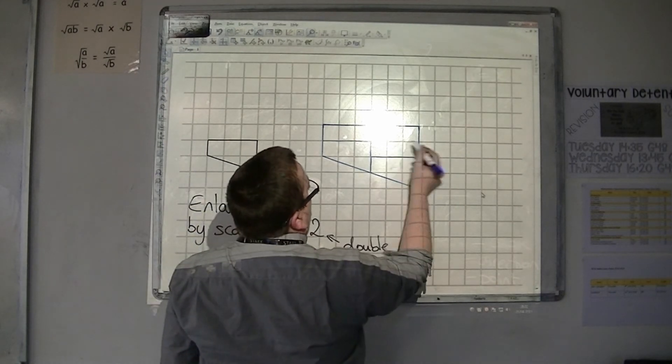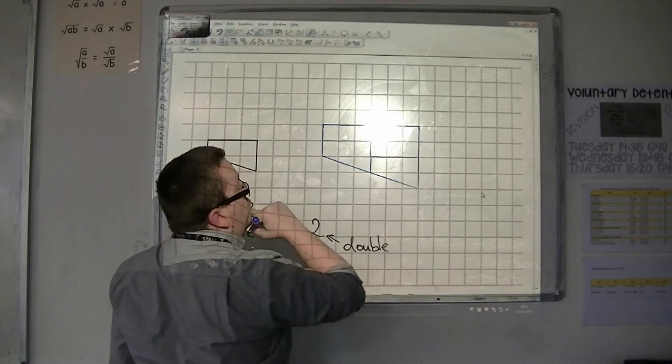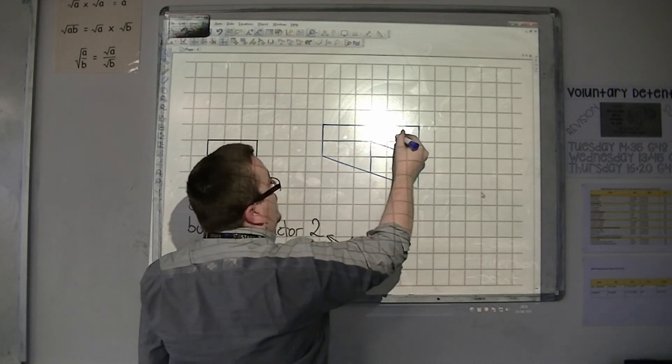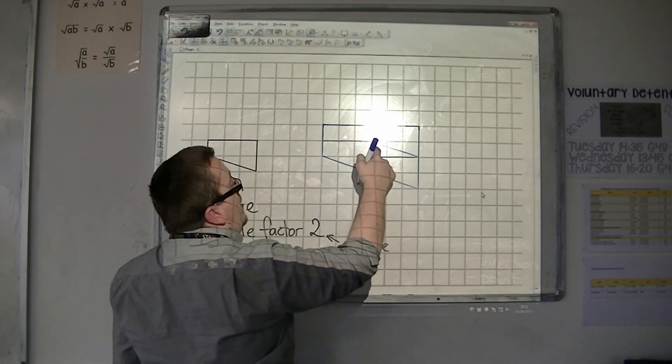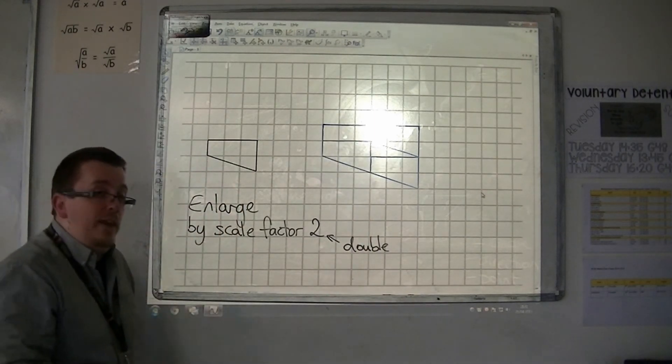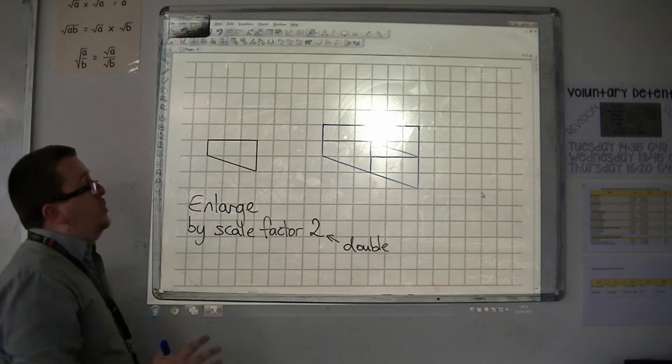So, in actual fact, if I was to draw another one in, there's another one, and then that part and that part becomes another one as well. So, I can actually fit 4 into the shape.